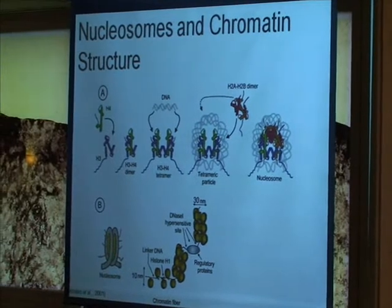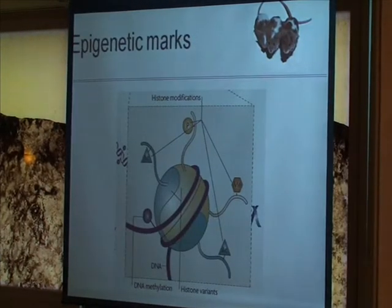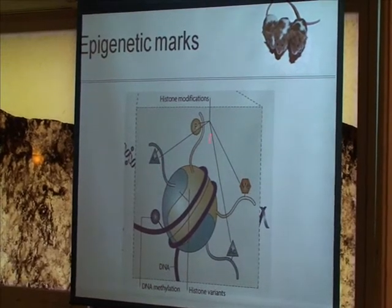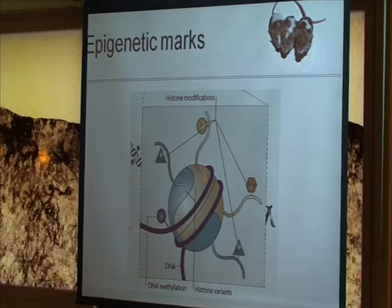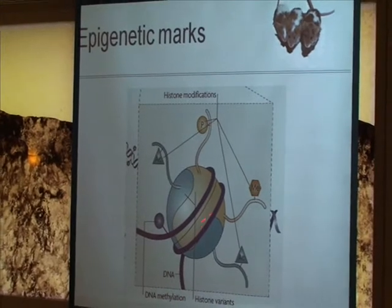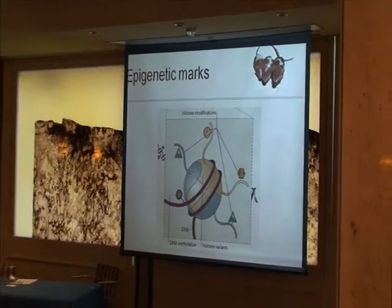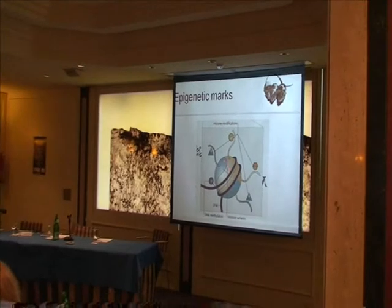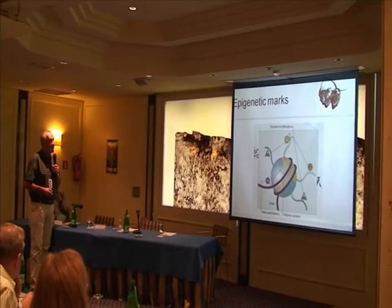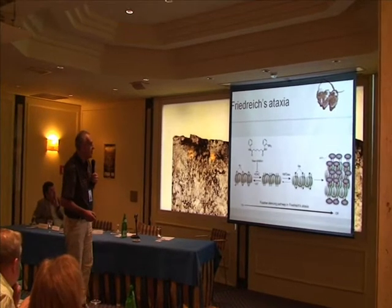According to how these tails are modified, the structure of the chromatin packaging may change. There are a number of modifications that can take place on these histone tails, including acetylation, phosphorylation, methylation, ubiquitination, and others. There are also changes that may occur in DNA itself, particularly methylation, and there is a clear correlation between DNA changes and histone changes.